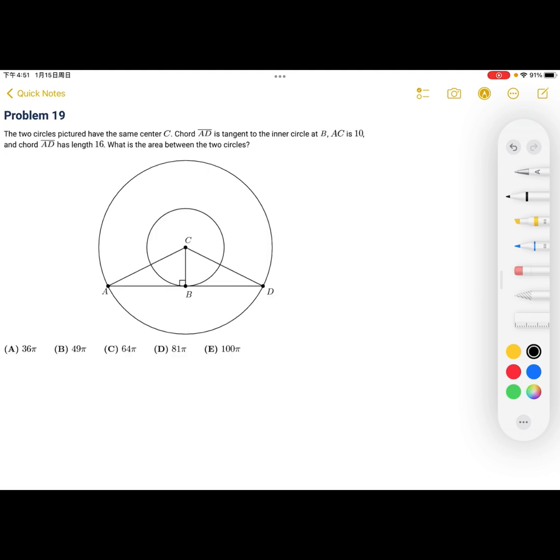Problem 19. The two circles pictured have the same center, C. Chord AD is tangent to the inner circle at B. AC is 10. And the chord AD has length 16. What is the area between the two circles? Chord AD is tangent to the inner circle at B. AC is equal to 10. And chord AD is equal to 16.